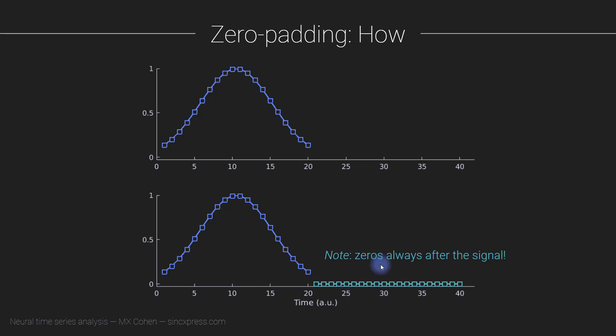Why do we add zeros and not some other number? The idea is that a zero is not containing any additional information about this signal, so we're just adding nothing to the end. There's a bit of a philosophical debate to be had about whether adding zeros is really adding nothing.